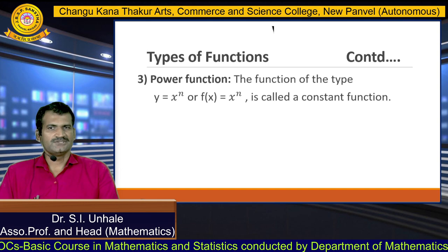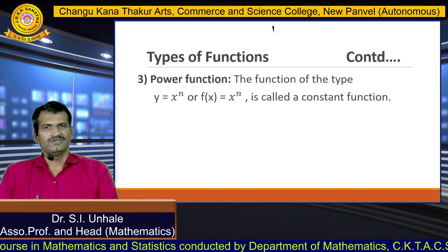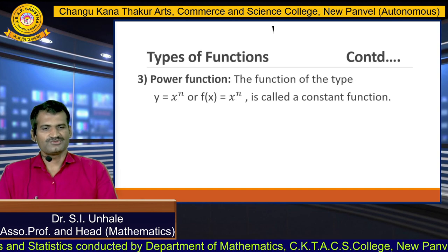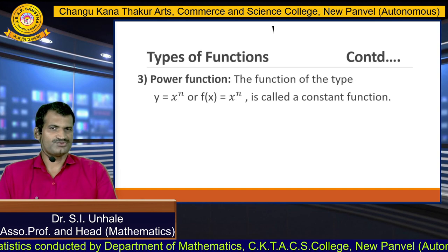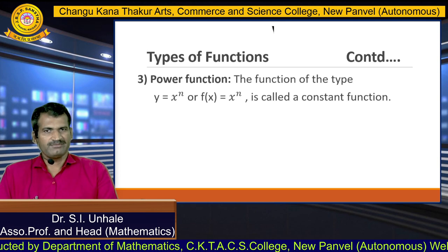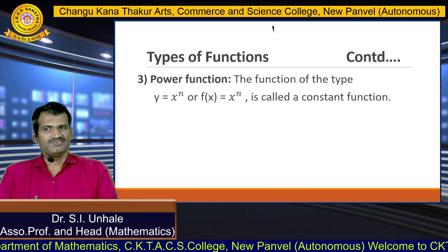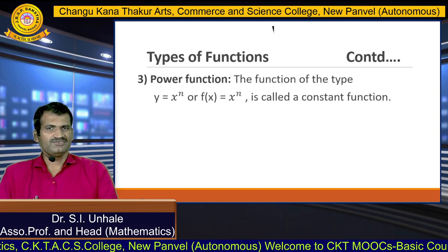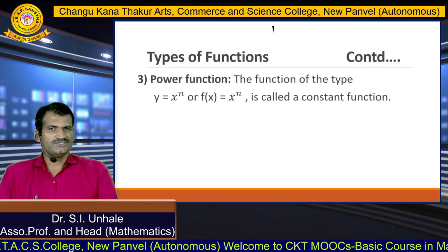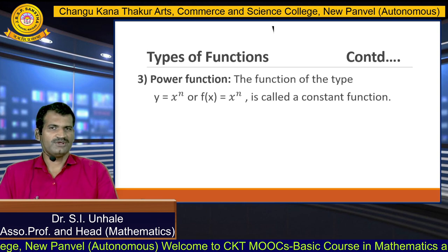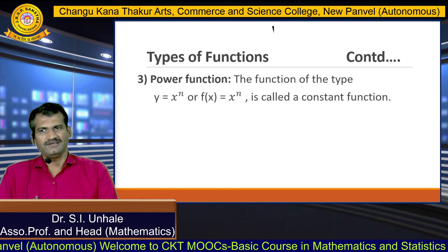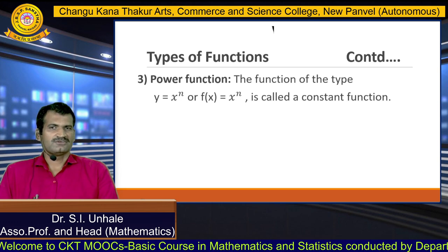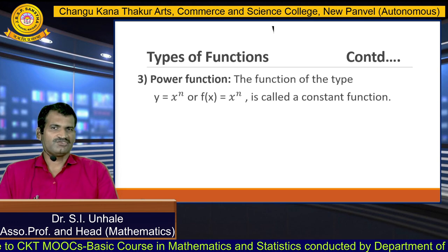To recap: the first type is the constant function, y = c or f(x) = c. The second type is the linear function, y = a + bx where a and b are constants. The third type is the power function, y = xⁿ or f(x) = xⁿ. We also defined the exponential function eˣ and the logarithmic function log(x). Thank you so much.